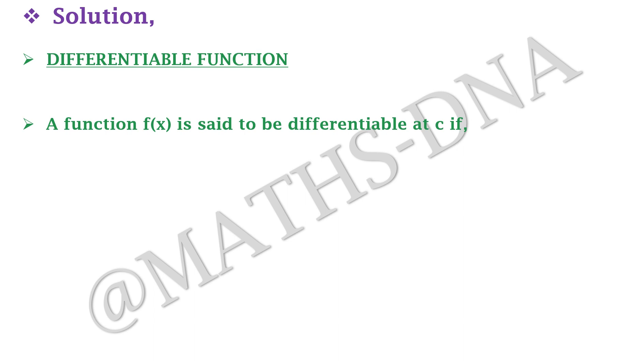Now let us solve it, but before that, what do we mean by a differentiable function? A function f(x) is said to be differentiable at c if it satisfies two conditions. The first one: f'(c) equals limit x tends to c of [f(x) minus f(c)] upon [x minus c] exists, and when will that limit exist?